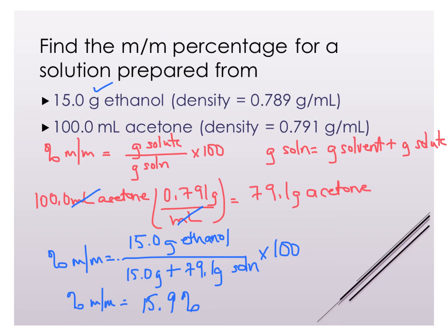And sometimes you'll see it as mass mass, sometimes it will be written out as by mass. Either one means exactly the same thing. Now I know that for every 100 grams of solution it contains 15.9 grams of ethanol. So then this can be a relationship that I use in another calculation.